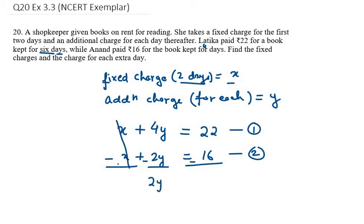Subtracting the equations: 22 minus 16 equals 6, and 6 divided by 2 equals 3. So the additional charge per day is 3 rupees, meaning y = 3.